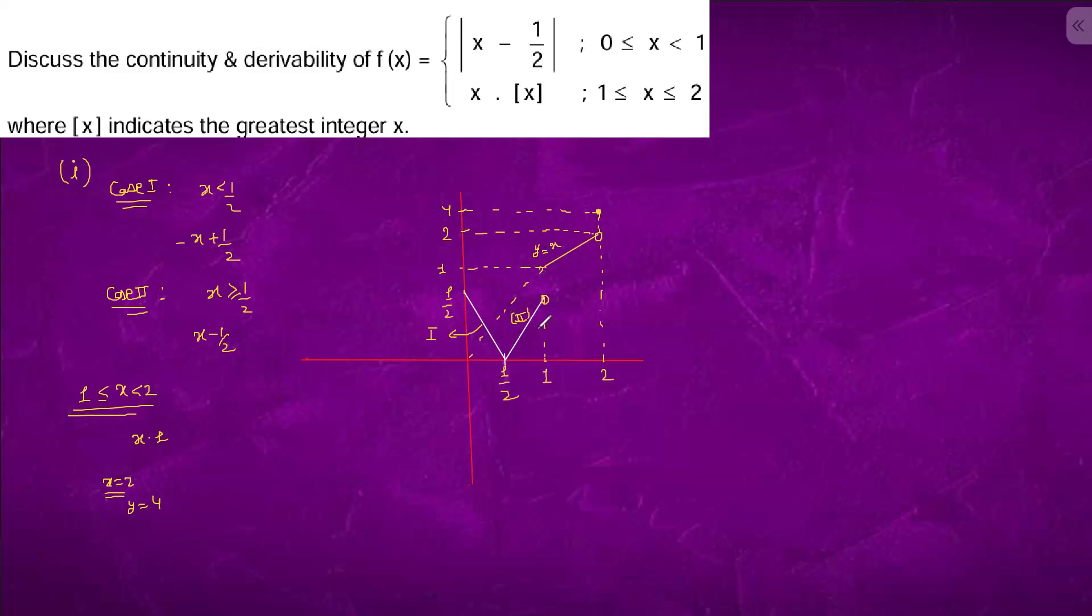Point of discontinuity is 1 and 2, and point of non-differentiability is 1/2, 1, and 2. So these are the points of discontinuity and these are the points of non-differentiability.